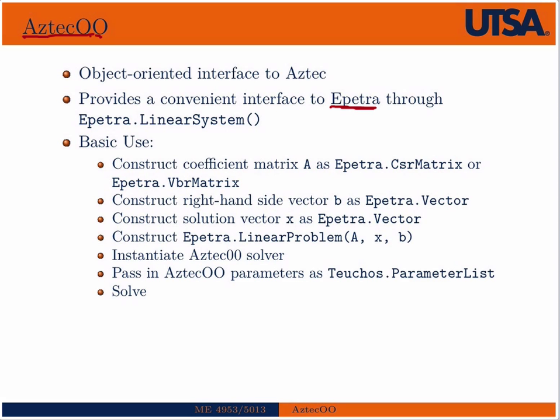And again, it provides an interface to Epetra. One of the nicest ways to do that is to instantiate an Epetra linear system, which takes the arguments of an Epetra matrix, a vector of unknowns, and a right-hand side vector b. Of course, this would be to solve the matrix equation Ax equals b in the context of massively parallel.